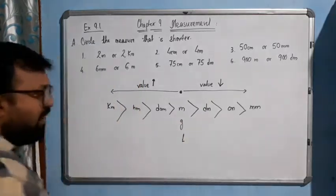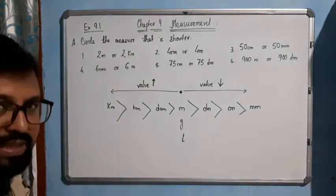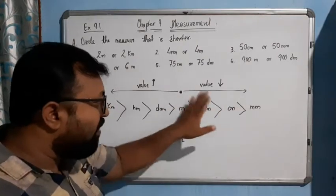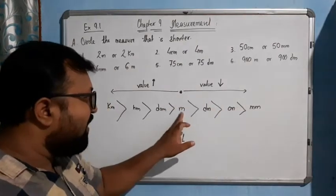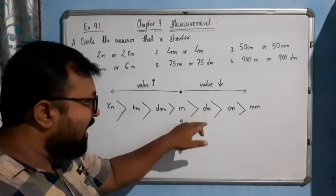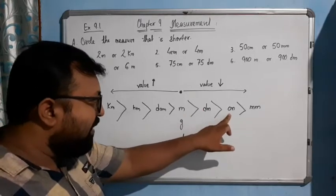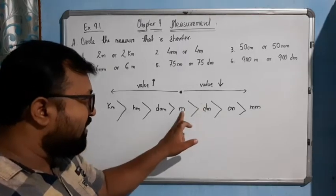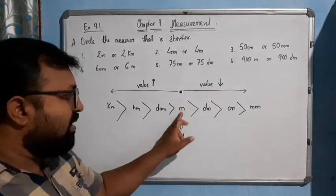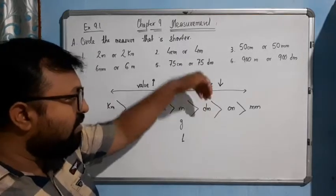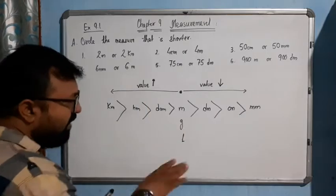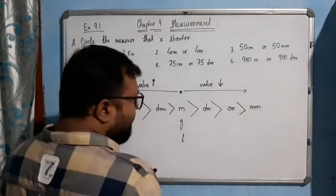If you move towards the right-hand direction, millimeter is smaller than centimeter, and centimeter is smaller than decimeter. So value decreases moving right — meter is greater than decimeter, decimeter is greater than centimeter, centimeter is greater than millimeter. That's why value decreases in that direction and increases in the other.